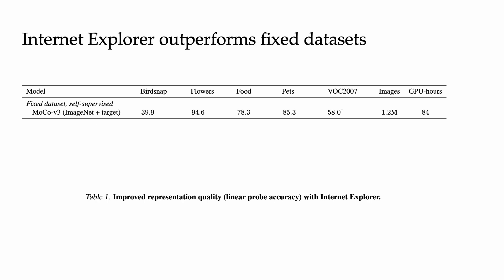We compare the linear probing representation quality of different models on a variety of target tasks, including BirdSnap, Flowers, Food, Pets, and VOC 2007. We see that a MoCoV3 model pre-trained on just ImageNet and the target dataset does poorly on these tasks. If we start with this checkpoint, we can then turn to the Internet to acquire more training data. Notably, how you search the Internet really matters. If you generate queries uniformly at random from the vocabulary, performance stays about the same.